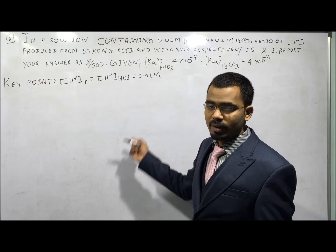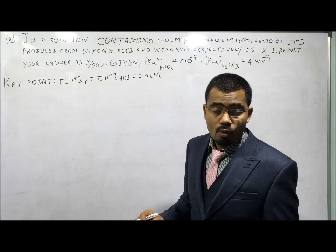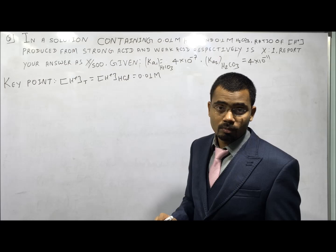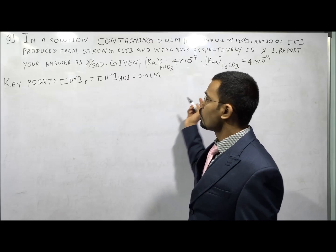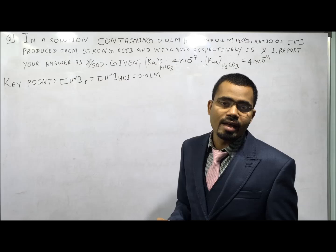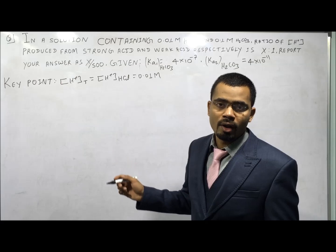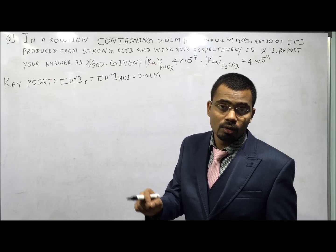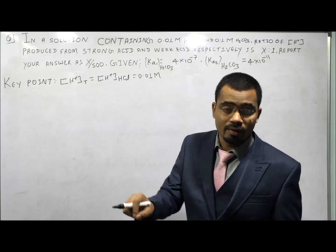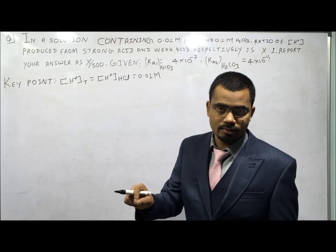In the presence of a strong acid, the degree of dissociation of the weak polyprotic acid is very, very small. Now we need to find the ratio of H⁺ coming from the strong acid and from the weak acid. To solve this, go for the first dissociation reaction of the weak acid. No need to write the second dissociation, because α₁ is very very small, therefore α₂ will be even smaller.